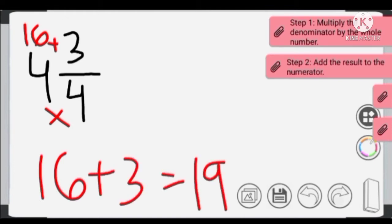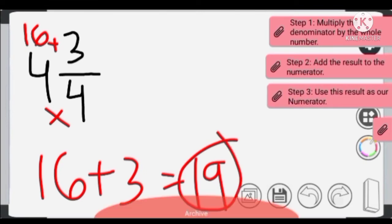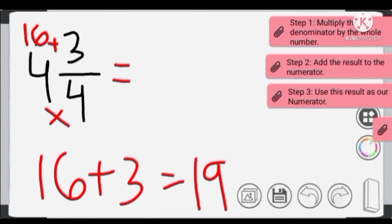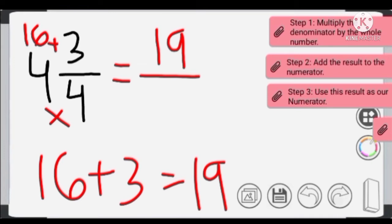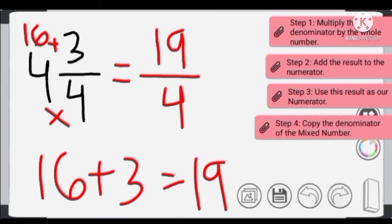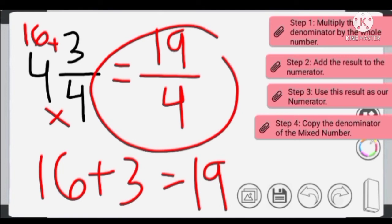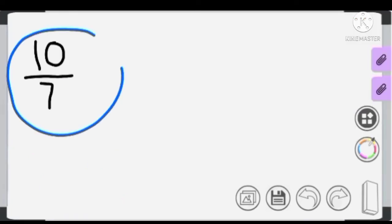16 plus 3 equals 19. Step 3: we use 19 as our numerator for the improper fraction. Step 4: we copy the denominator from our mixed number, which is 4. So our answer — our improper fraction — is 19/4.